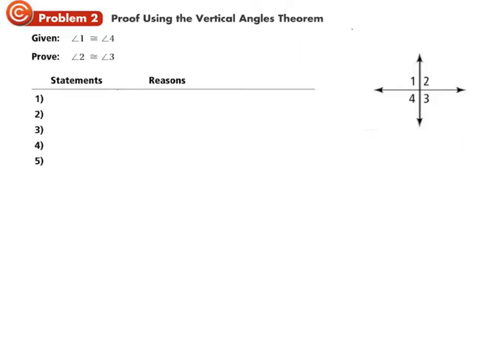Now that we know the Vertical Angles Theorem, we're going to use it. Here we have a given piece of information: angle one is congruent to angle four. If we didn't have that, we wouldn't be able to proceed — they have to give us something to get started. What we're trying to prove is that angle two is congruent to angle three.